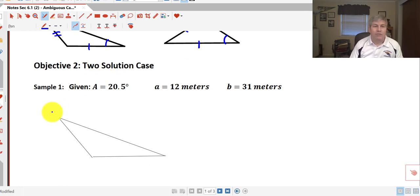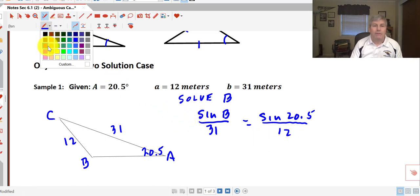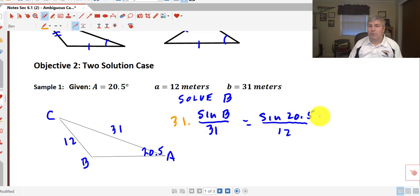So if we have a particular triangle, and I'll go ahead and label my triangle, we're given that angle A is 20.5°, side a is 12 meters, and side b is 31 meters. We want to solve this particular triangle. We're going to start by solving for angle B. Multiplying both sides by 31, so I isolate sine of B.